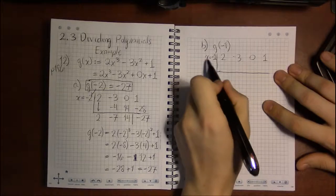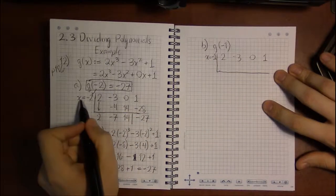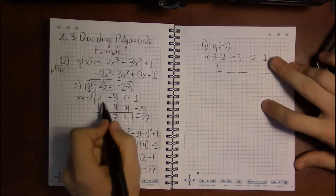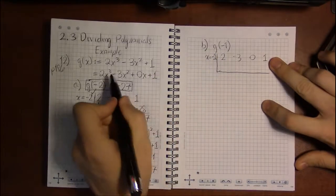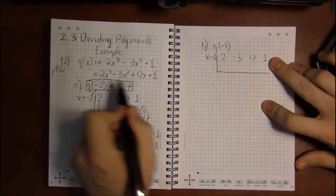So the number on the outside is now minus 1, not minus 2. But everything else has stayed the same because we're still using g. We're still using this polynomial.